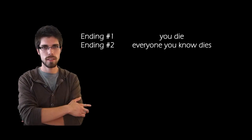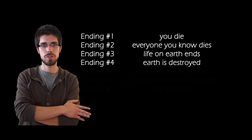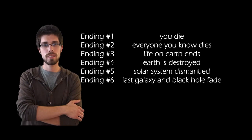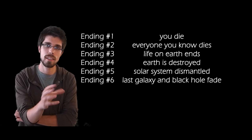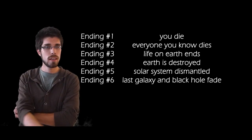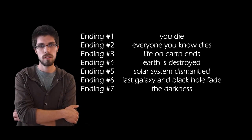So to recap. One. You die. I die. Two. Everybody else dies. Three. Life on earth dies. Four. The earth is destroyed. Five. The solar system falls apart. Six. What's left of the last galaxy collapses into the last black hole, which evaporates. And the seventh ending is the long story of darkness. Whether we are talking about ending number one or ending number seven, the world as we know it comes to an end.